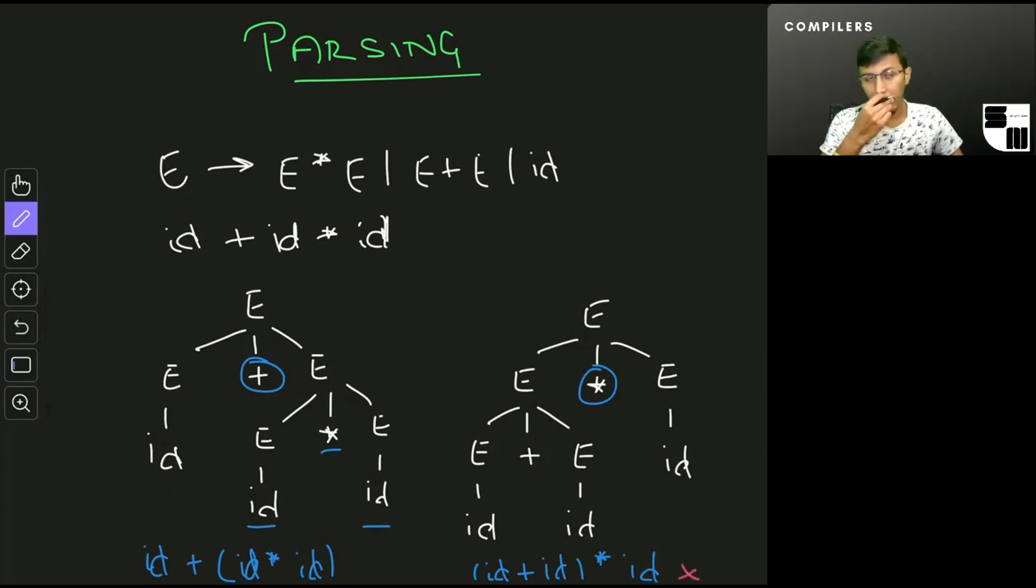In our case we always want to enforce that the multiplication happens first. There are different ways to handle ambiguities which we'll discuss in the next video. I hope in this video you've understood what leftmost and rightmost derivations are and how we can construct two different or multiple different parse trees.